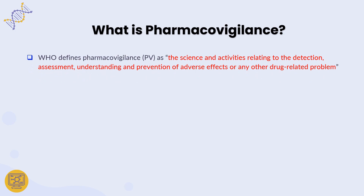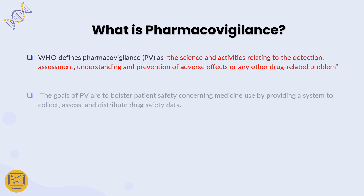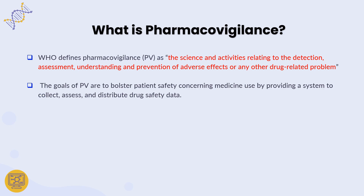As per the World Health Organization, pharmacovigilance is defined as the science and activities related to the detection, assessment, understanding, and prevention of adverse effects or any other drug-related problems. These four — detection, assessment, understanding, and prevention — are the fundamental pillars of pharmacovigilance. The goal of pharmacovigilance is to bolster patient safety concerning the use of medication through a system that collects, assesses, and distributes drug safety data.